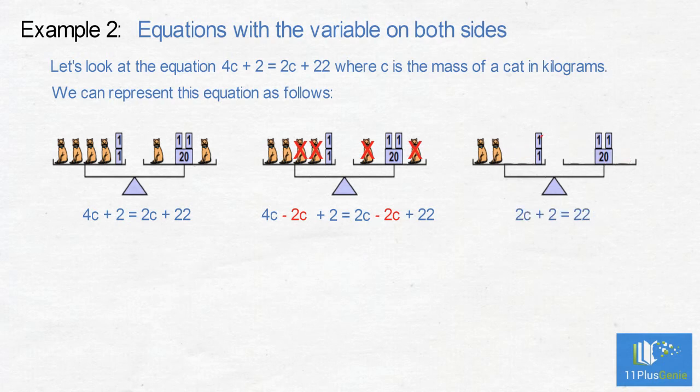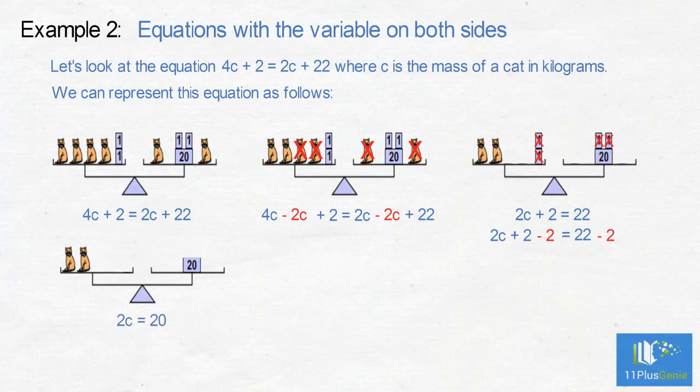Our next step is to take the 2 one kilogram mass pieces off on the left hand side of the scale. To keep the scale balanced we must take 2 one kilogram mass pieces off the right hand side of the balance. We now have 2c equals 20. To find the mass of 1 cat we need to divide by 2. So the mass of 1 cat is 10 kilograms.